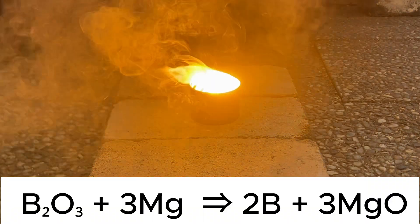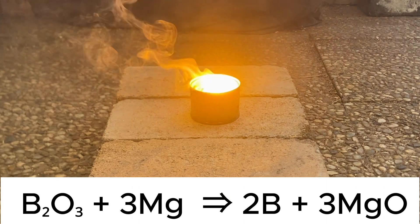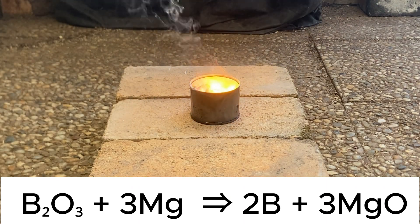The boron oxide reacts with magnesium metal to form boron and magnesium oxide.